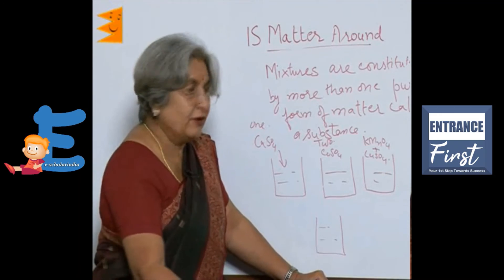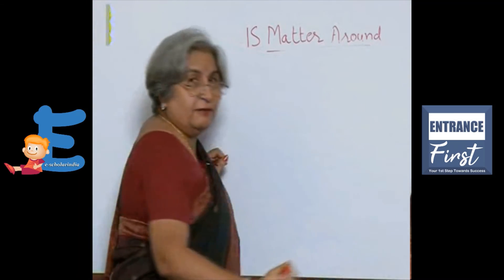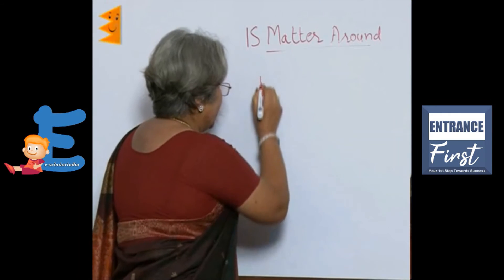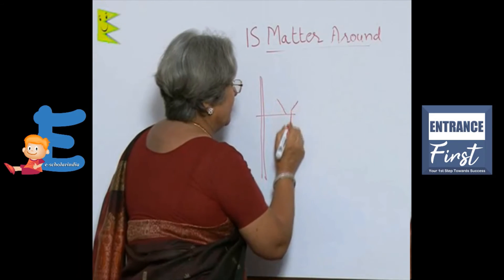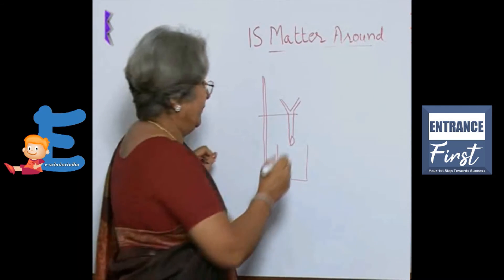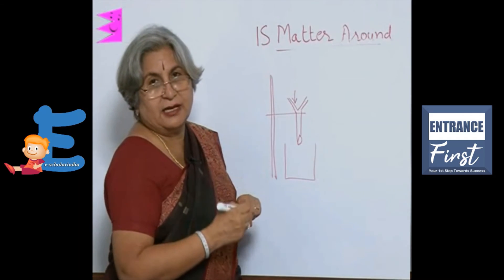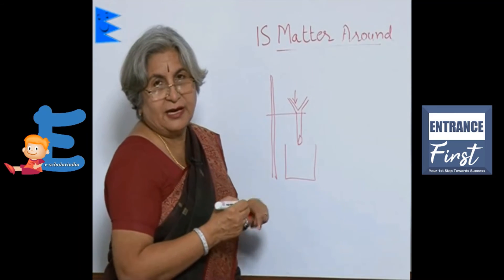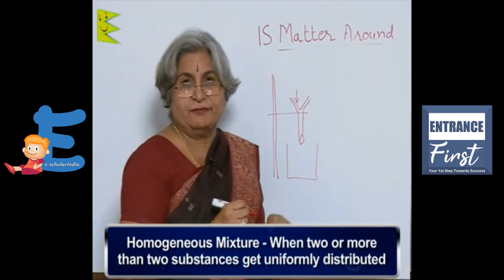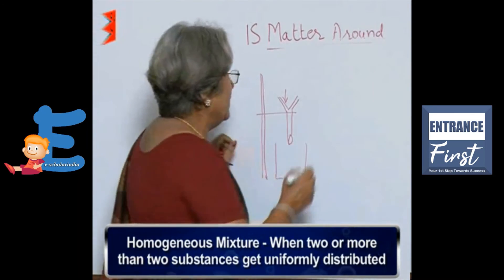Then we can filter it. For filtering, we need a filter paper and a stand. We fix a funnel and put a cone-shaped filter paper, and then pour this mixture of copper sulfate — or the other mixture of potassium permanganate and copper sulfate. And what do we find? There is no residue; there is nothing on the filter paper. So this kind of mixture, where the two components have uniformly got distributed, is called a homogeneous mixture.